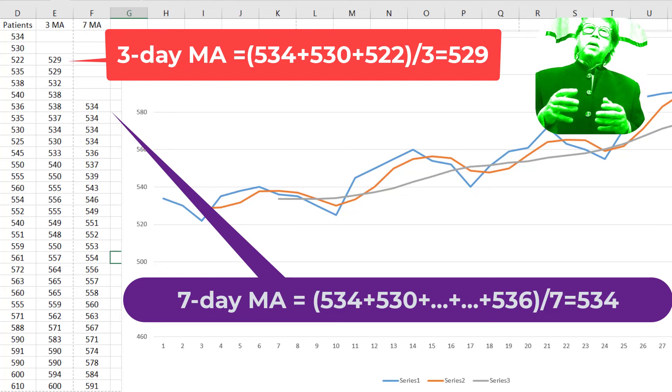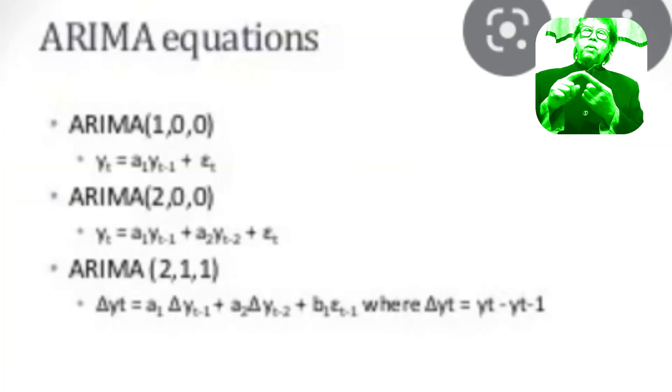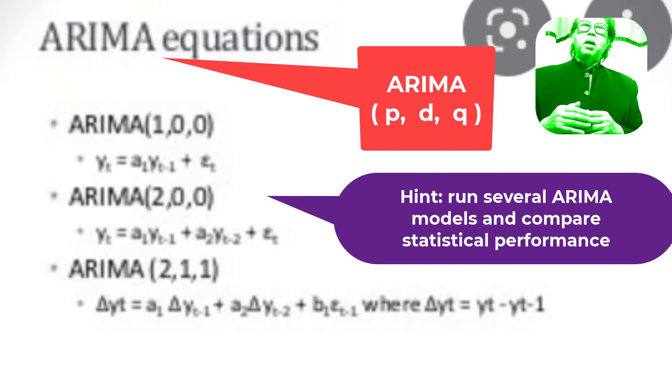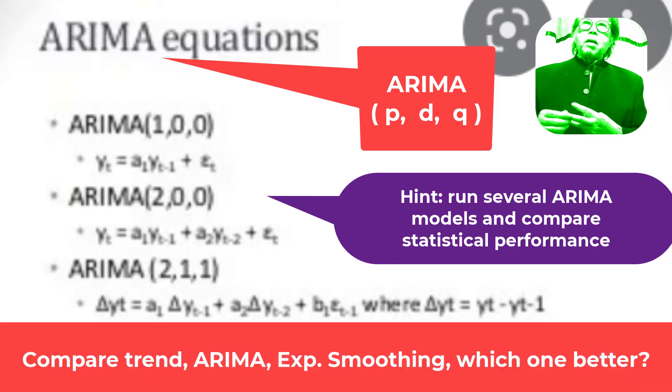So remember to summarize, ARIMA has three components: P, D, and Q. You need to try that using SPSS. It's simple. You need to compare the performance, look at the R-squares, look at the mean prediction error, look at the root mean square error, etc. And then you can make a decision, for example, comparing trend forecasting, ARIMA forecasting, and exponential forecasting. If ARIMA forecasting is better, you'll be using this to forecast in your assignment.